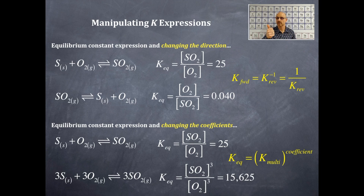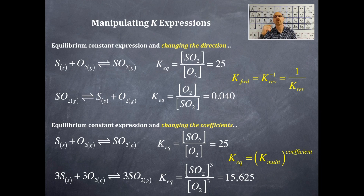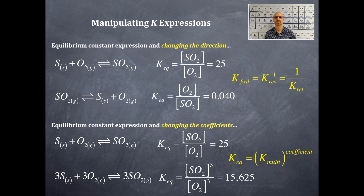To summarize: solids and liquids are not included; products over reactants with stoichiometric coefficients as exponents. If you change the direction of the reaction, it's 1 over K. If you multiply the equation, you take K to the power of that multiplying coefficient.